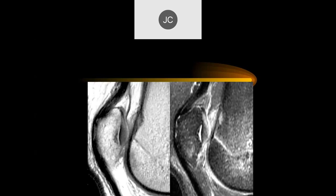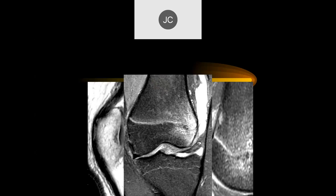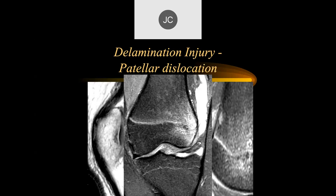Looking at the patellar cartilage on the PD fat sat image, it looks like there's separation of the cartilage from the bone — like a delamination, maybe. There's edema in the lateral femoral condyle, maybe from a patellar dislocation. This is a transient patellar dislocation. It's relatively common to get injuries to articular cartilage with patellar dislocations — these glancing blows tend to produce delamination type injuries.